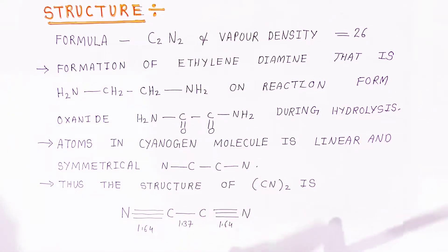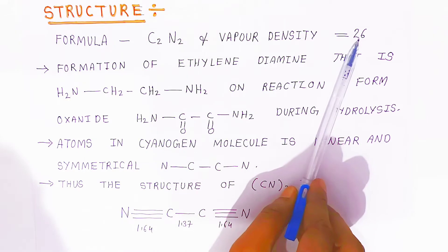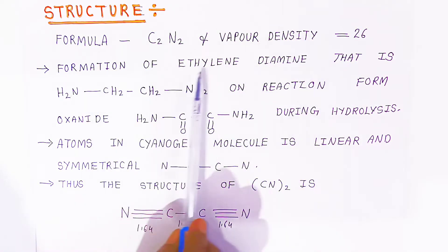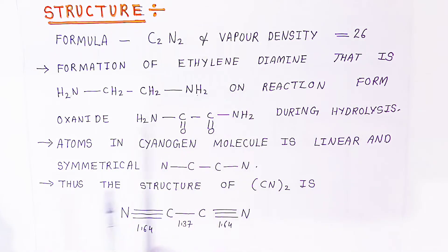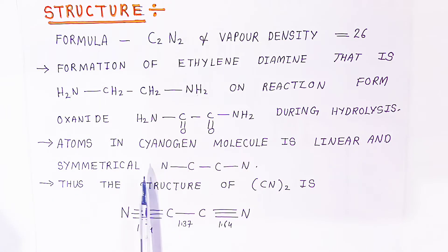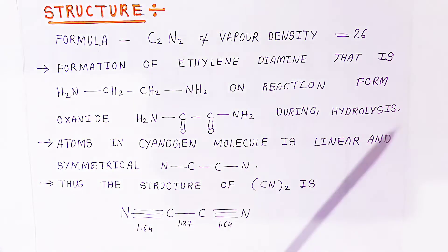Now, what is the structure of cyanogen? The formula is C₂N₂ and its vapor density is 26. From the formation of ethylenediamine during hydrolysis, we know that the atoms in the cyanogen molecule are linear and symmetrical. The structure of cyanogen is: a carbon-carbon single bond with a carbon-nitrogen triple bond on each end. The carbon-carbon bond length is 1.37 Ångström and the nitrogen-carbon bond length is 1.64 Ångström.